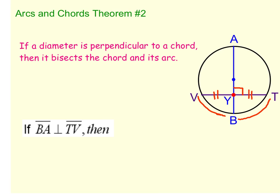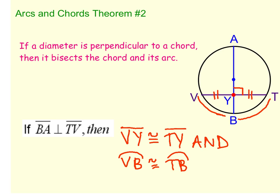Let's go ahead and fill in the rest of this statement. If BA—remember this symbol is perpendicular—if BA, the diameter, is perpendicular to TV, the chord, then two things are true. VY, which is a chord, is congruent to TY, which is also a chord, and arc VB is congruent to arc TB.